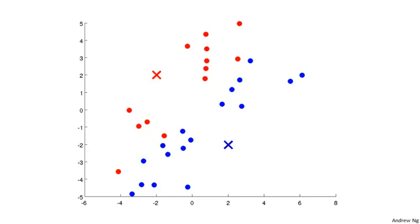The other part of k-means — the inner loop — is the move centroid step. What we're going to do is take the two cluster centroids, that is the red cross and the blue cross, and move them to the average of the points colored the same color. So we look at all the red points, compute the mean of their locations, and move the red cluster centroid there. And the same thing for the blue cluster centroid — look at all the blue dots, compute that mean, and move the blue cluster centroid there.